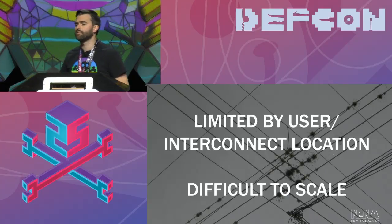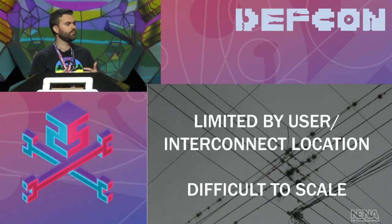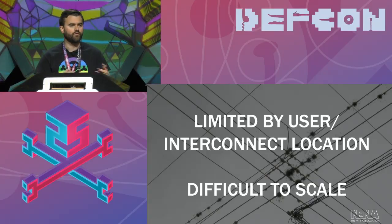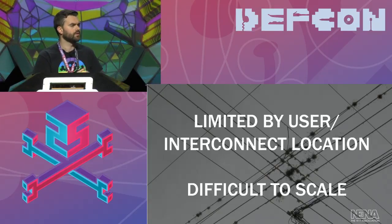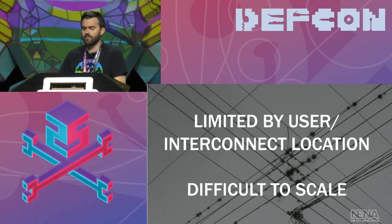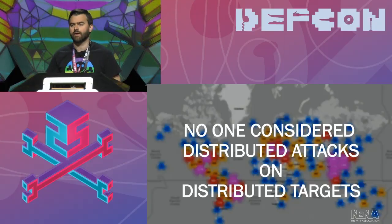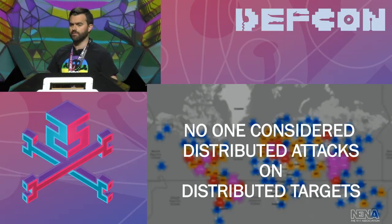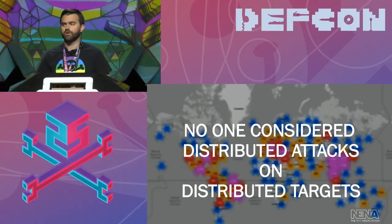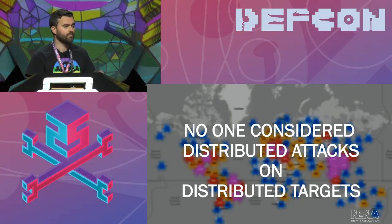We also expected attacks would be limited by user location — at worst, an attack could hit a region. Because some places have regional interconnections of 9-1-1 systems, with one selective router or a few serving large populations. We thought the worst this could go is a few PSAPs — it's really difficult to scale. And we never thought there could be a distributed attack on distributed targets. That's not the normal model. You normally think of Mirai going after Brian Krebs, not Mirai going after all of the Internet. But when you're dealing with scales so much different — like in the telephone network — all of a sudden that becomes true.